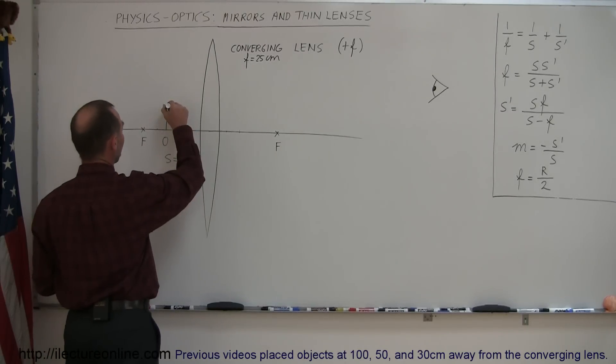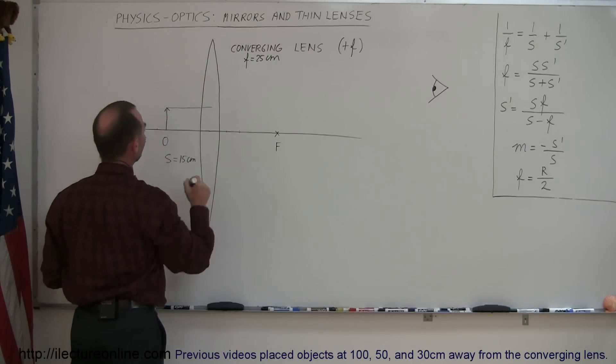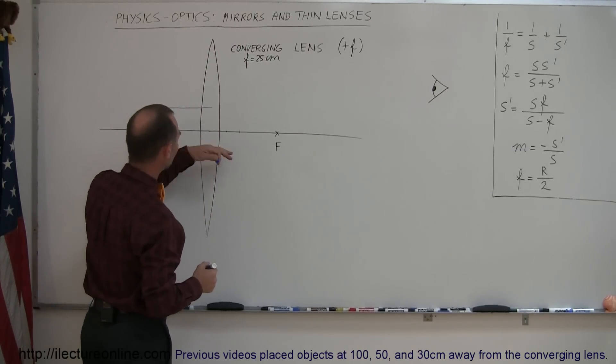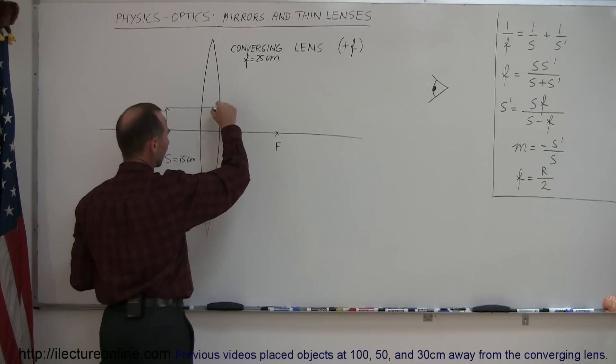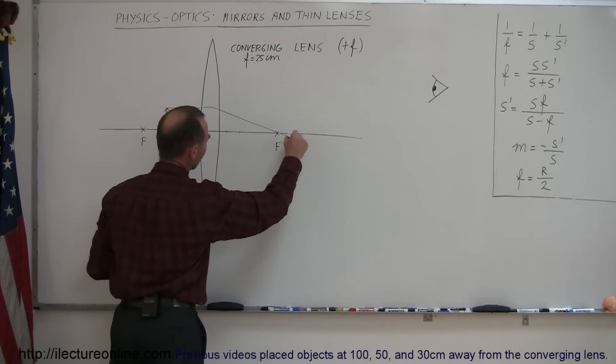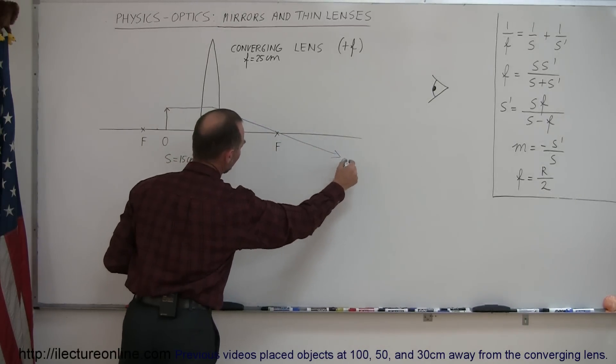The first ray, always the same. We draw it parallel to the normal until we hit the lens. And then when the ray goes through the lens, it diverges or refracts and continues on through the focal point on the other side. So that's ray number one.